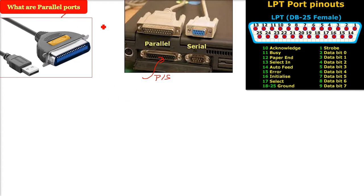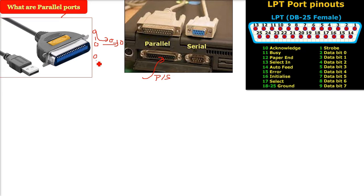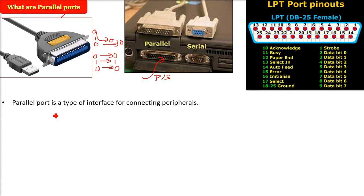Parallel ports are used for higher data rates. In serial communication, data is sent one bit at a time — zero goes, then one goes, sequentially, one by one. But in parallel communication, bits like zero, one, zero are sent all at the same time simultaneously.